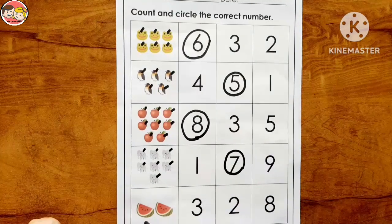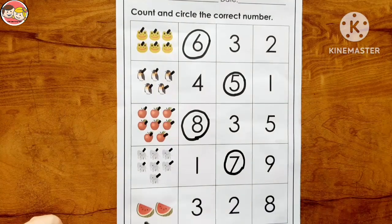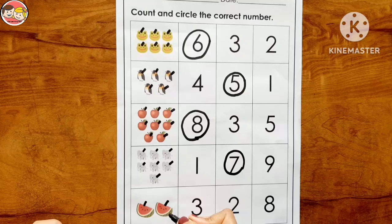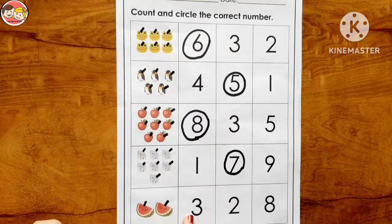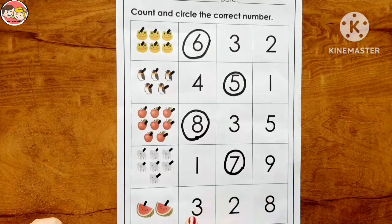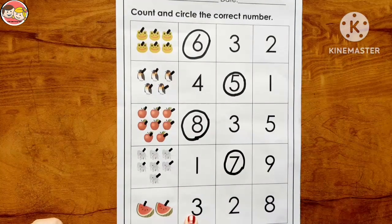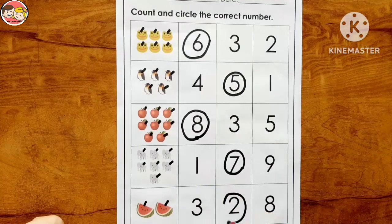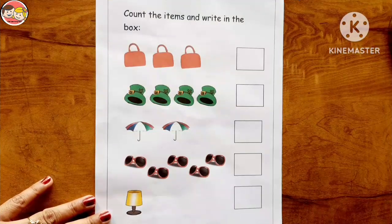Now look at the next box — these are watermelons. How many watermelons are here? One, two — there are two watermelons. Where is number two? Is this number two? No, this is number three. Is this number two? Yes, this is number two — let's circle it.